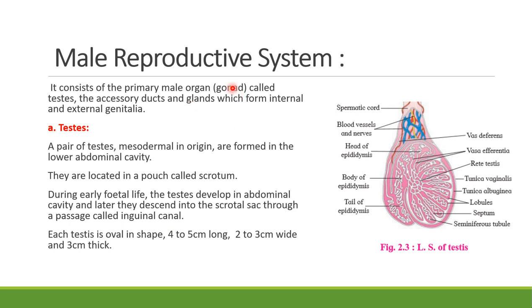Now we have an overall idea of how human reproduction occurs and its sequence. The male reproductive system consists of a pair of testes, accessory ducts, male accessory glands, and the external genitalia. These are the parts of the male reproductive system, which is located in the pelvic region.